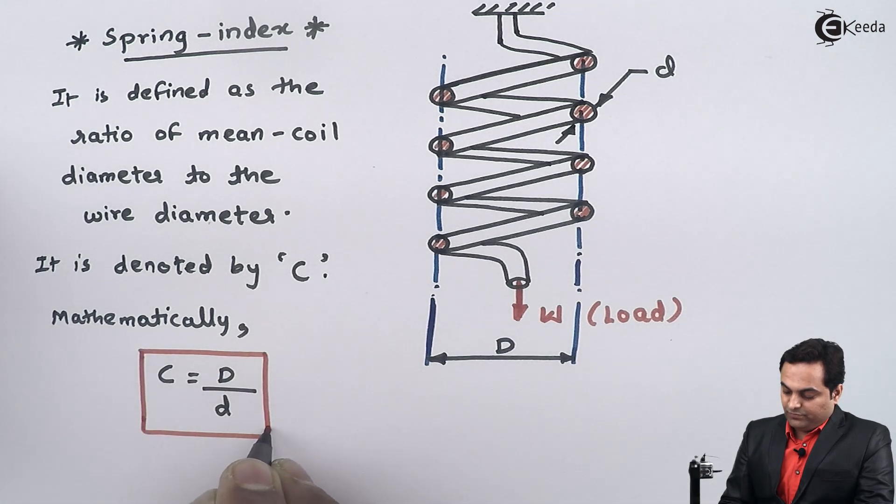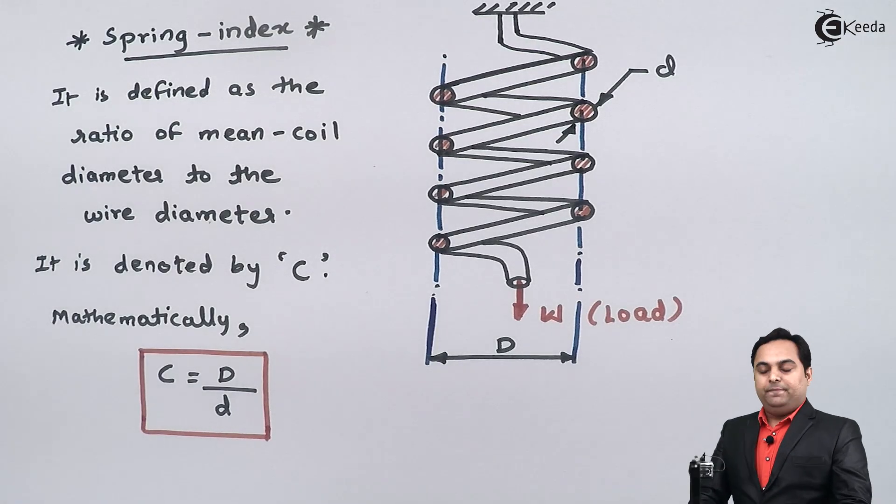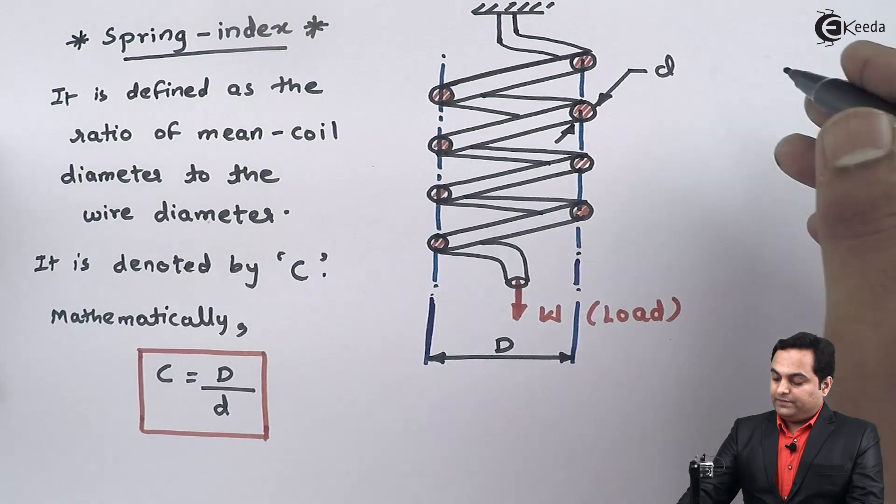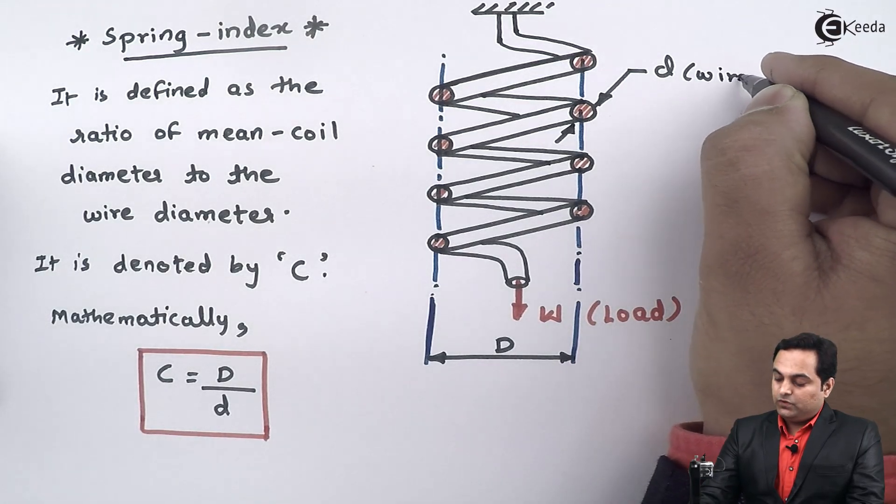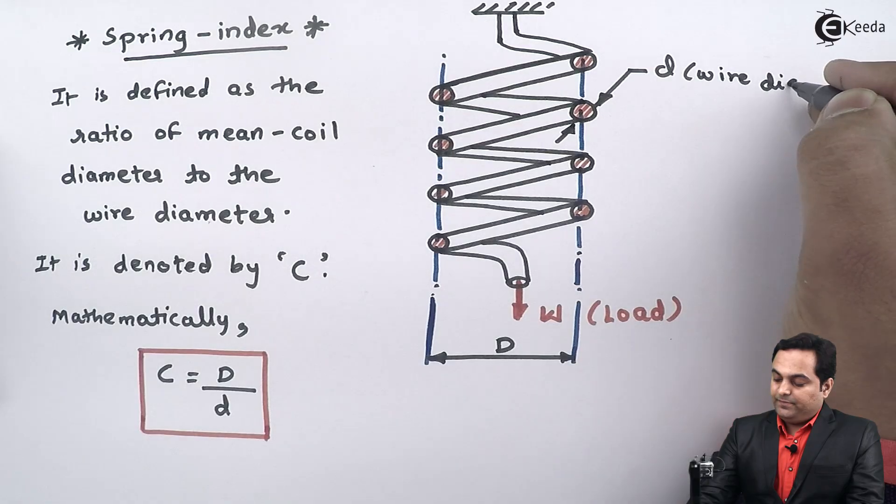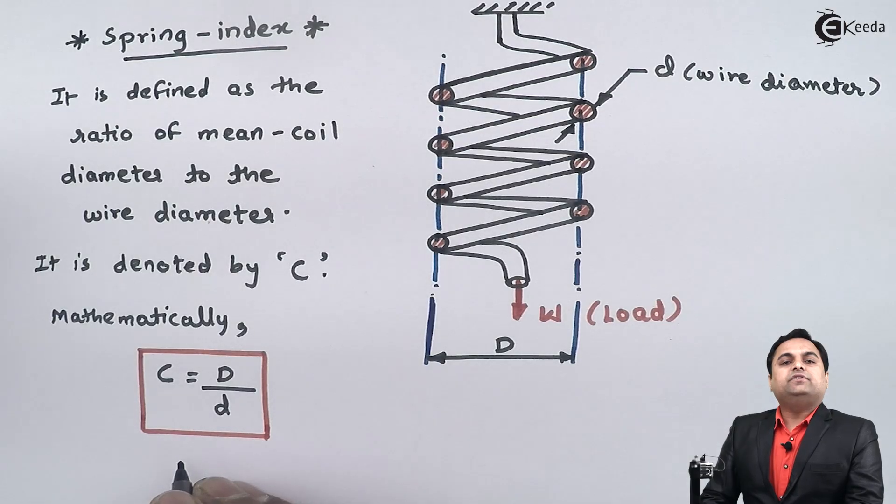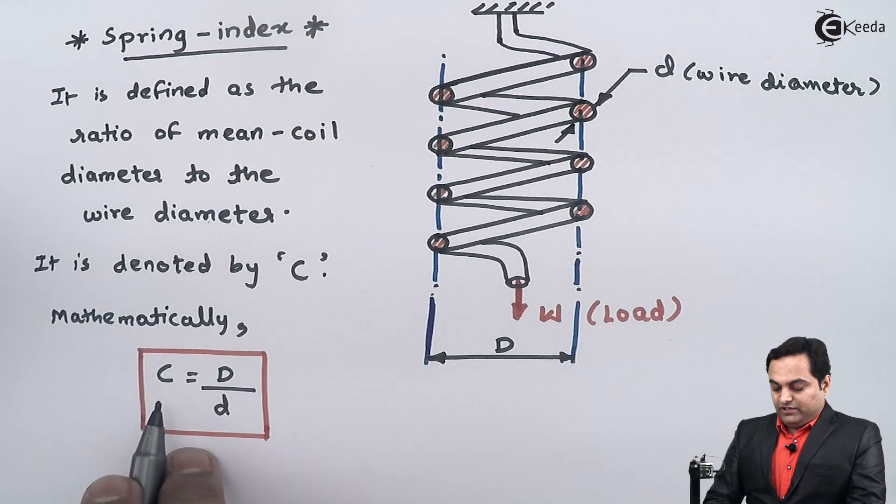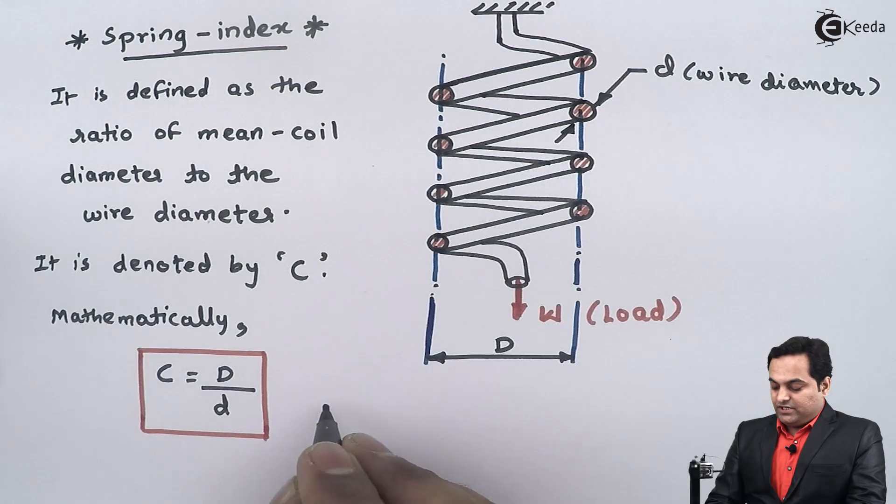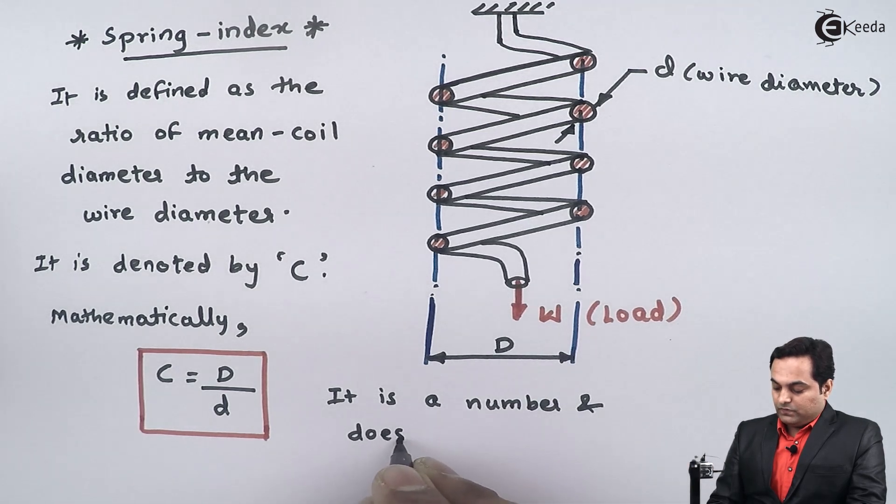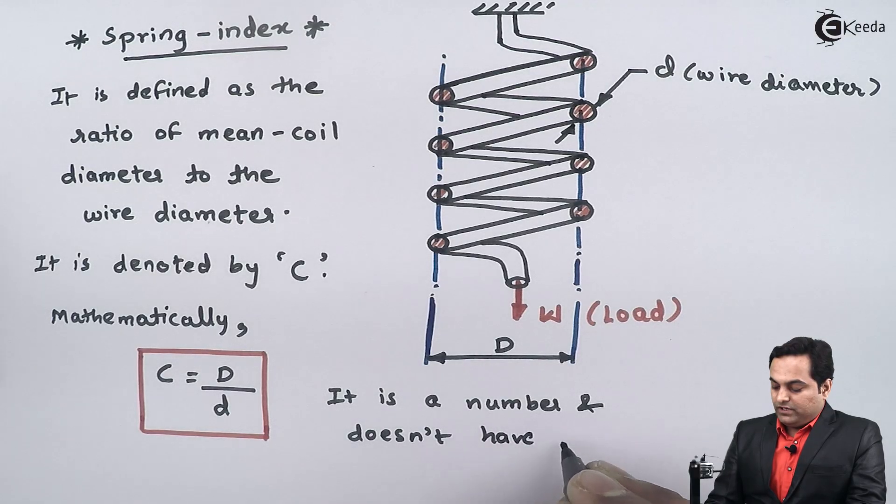This is the formula of spring index: mean coil diameter divided by wire diameter. In the design of springs, this value of C should be known. It is a pure number and doesn't have a unit.